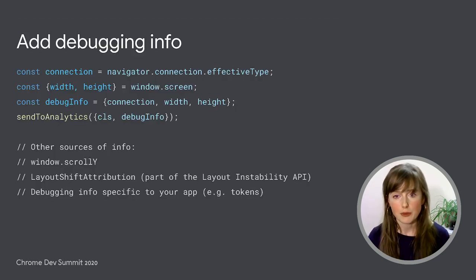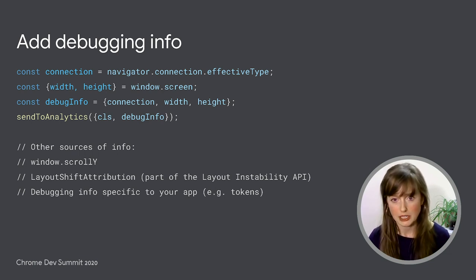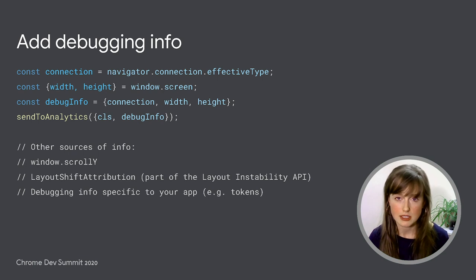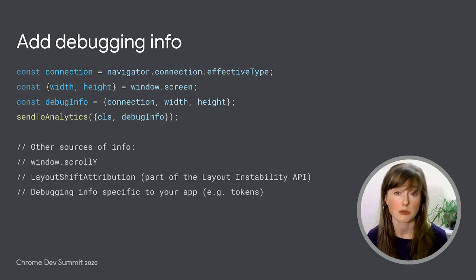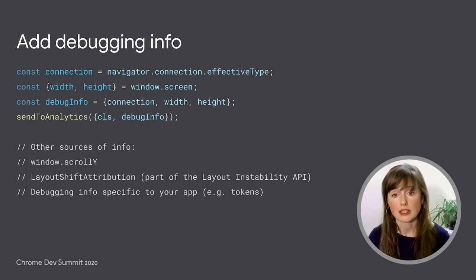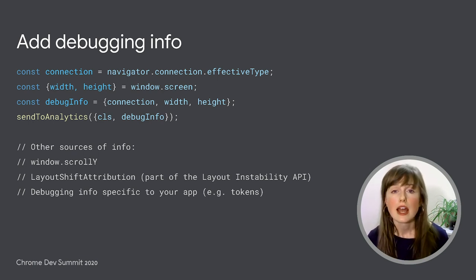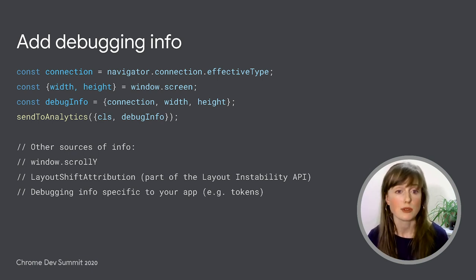Another thing I want to mention is that you can augment your web vitals reporting to provide you with more information about the circumstances under which a particular performance measurement was observed. This includes things like reporting on connection type or scroll position, as well as pieces of data that might be unique to your app — for example, if your app uses a debugging token.